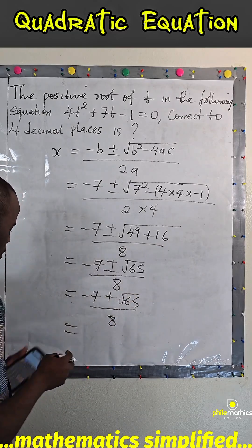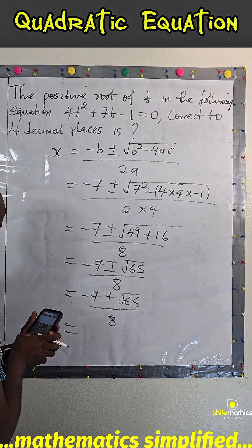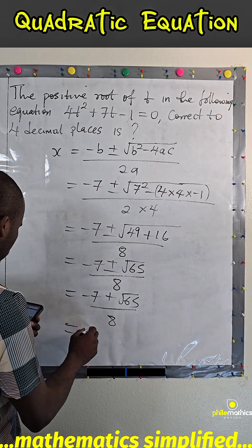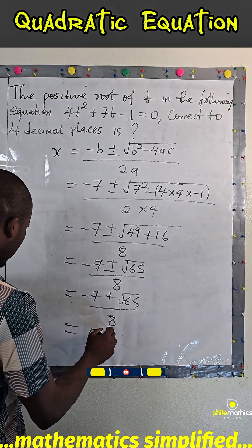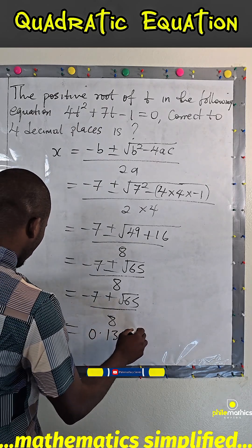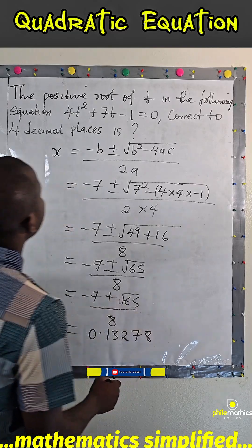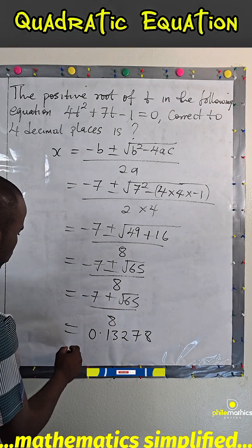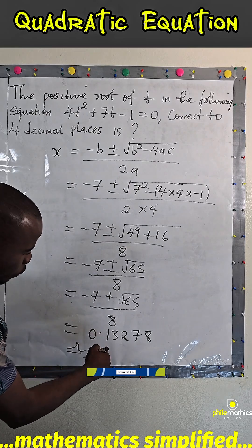And if we do that, we'll get 0.13278. And to four decimal places, it simply means after the point, count four digits.